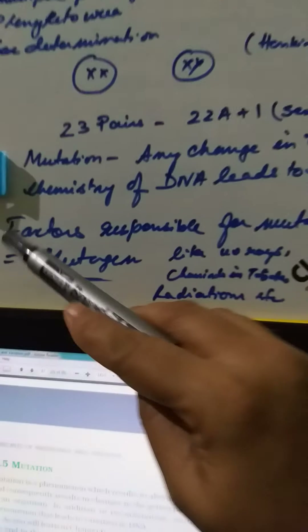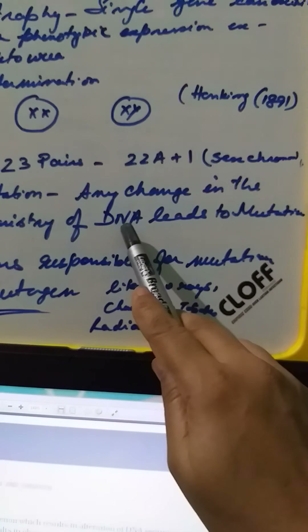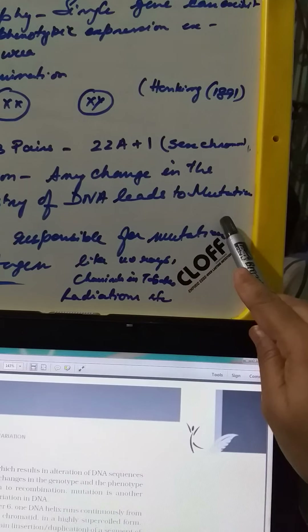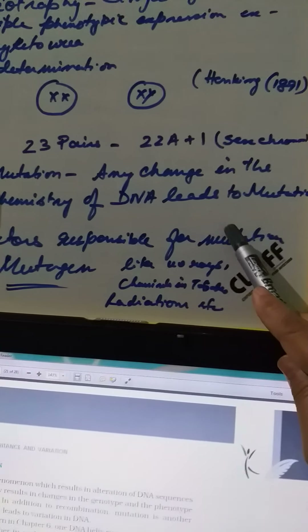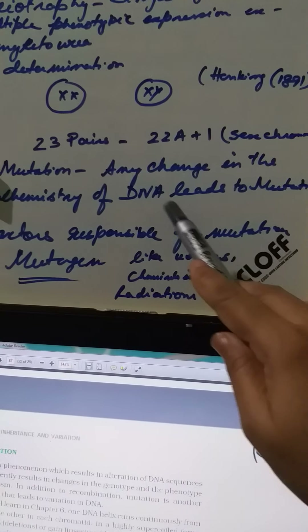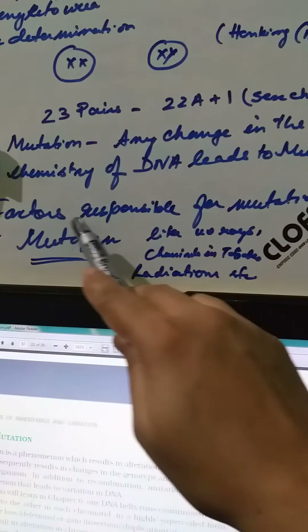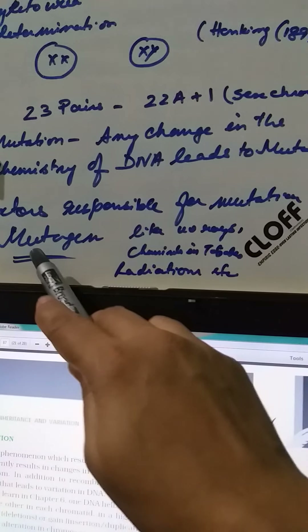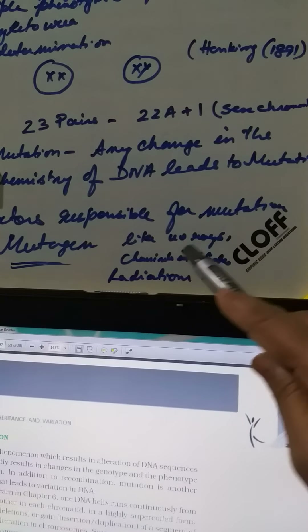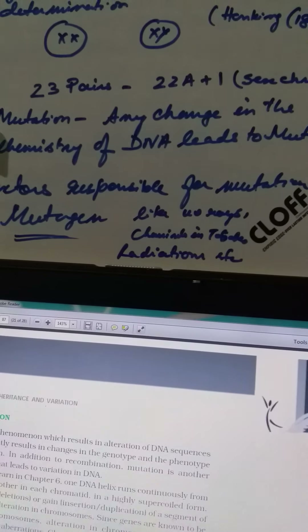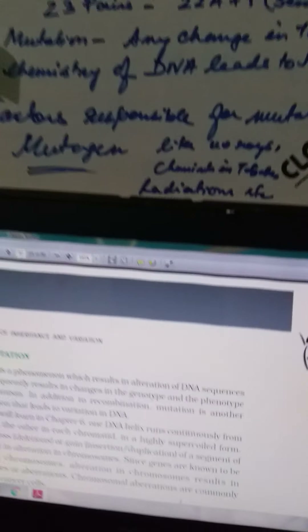A very interesting concept is mutation. In simple language, mutation means any change in the chemistry of DNA leads to mutation — that means the genetic sequence gets changed and you get a mutant variety. The factors responsible for mutation are known as mutagens, for example ultraviolet rays, chemicals in tobacco, and radiations. Certain geographical conditions may also lead to mutation.